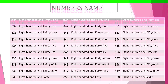Let's begin. Students, you can learn about the next number. 851 — its spelling: E-I-G-H-T, 8, H-U-N-D-R-E-D, 100, and F-I-F-T-Y, 50, O-N-E, 1 — 851. Let's begin — you can count the numbers: 852, 853, 854, 855, 856, 857, 858, 859, 860.